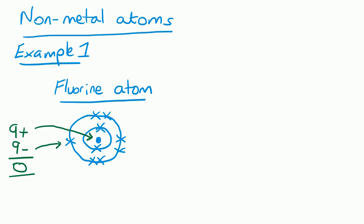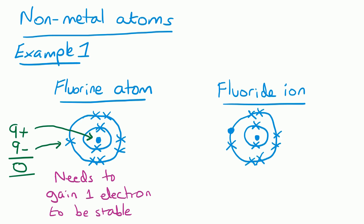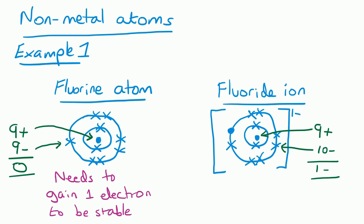Fluorine changes into a fluoride ion by gaining one electron — it needs one more electron to fill that outer shell. When we draw the fluoride ion, we show the gained electron as a dot to indicate it came from another atom. We draw square brackets around it and add the charge, which is 1−. The reason it's 1− is we still have nine positive protons but now ten negative electrons, giving one more negative than positive.